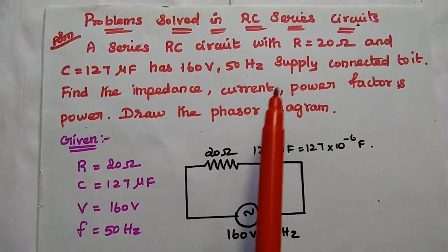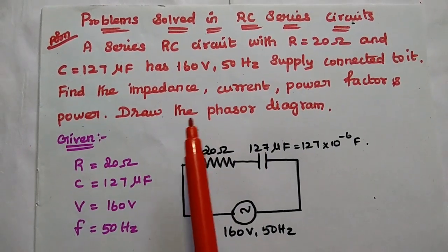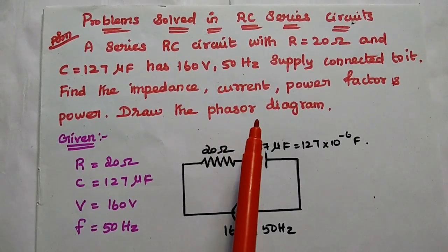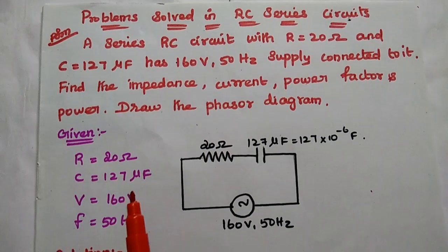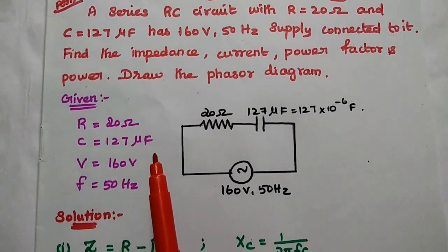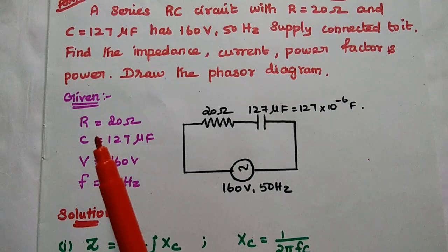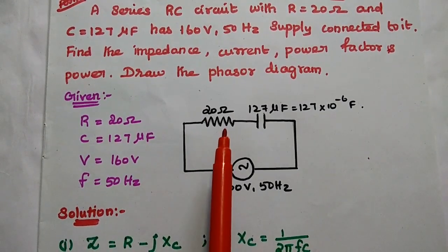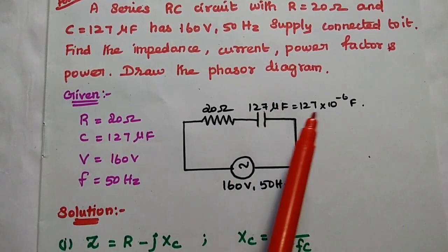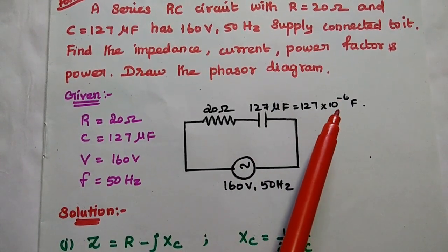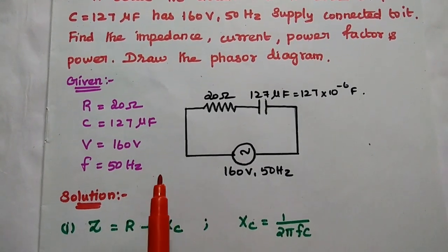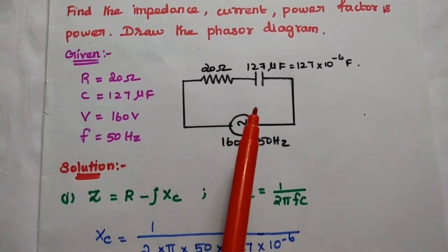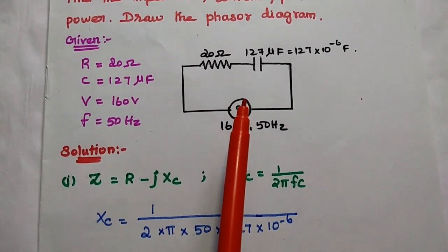Here the resistance and capacitance values are given. We are going to find out the characteristics of the RC series circuit. First we have to write the given data. The resistance value is 20 ohm. Capacitance is 127 microfarad — micro means 10 to the power minus 6. Voltage is 160 volt and frequency is 50 hertz.